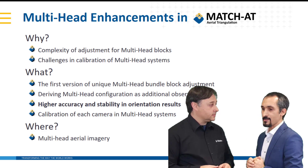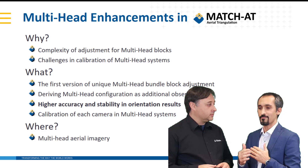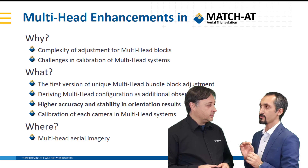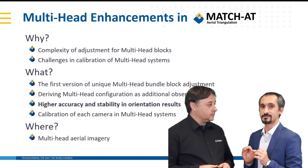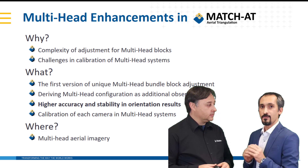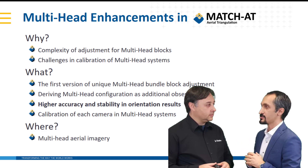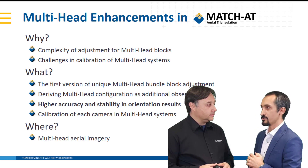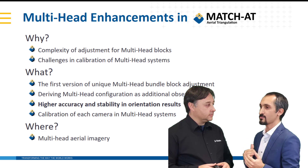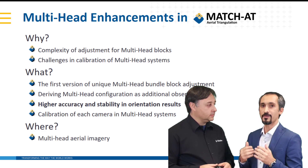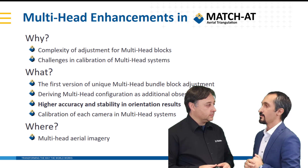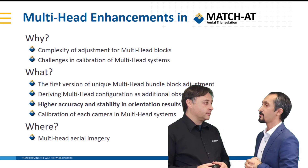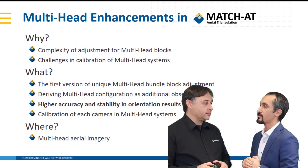Exactly as I mentioned, the new matching strategy is very interesting for multi-head projects, but the focus of the new matching strategy is for high-overlap projects. There are other challenges in multi-head projects, which are bundle block adjustment and the reliability of calibration results. These are the points we are focusing on in our roadmap to provide more solutions to project managers for reliable, more accurate, and high-performance results in the orientation of aerial triangulation.